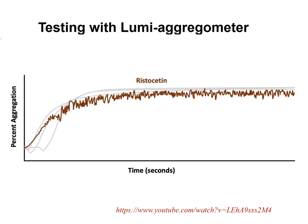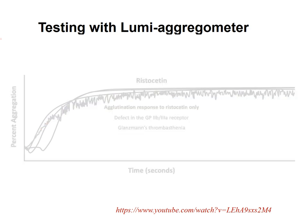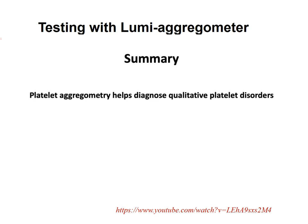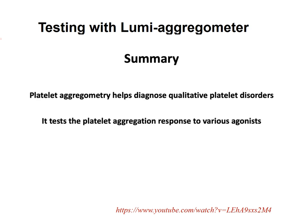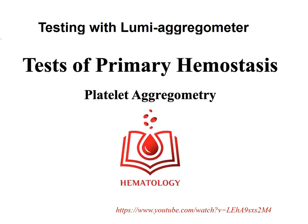Ristocetin is used as a positive control — it is not an agonist promoting aggregation but is necessary for von Willebrand factor-mediated platelet agglutination. No agglutination response implies decreased plasma von Willebrand factor or Bernard-Soulier syndrome (defect in GP1B95). If there is agglutination with ristocetin only but no aggregation with other agonists, it indicates a defect in the GP2B3A platelet receptor, as in Glanzmann's thrombasthenia. In summary: platelet aggregometry diagnoses qualitative platelet disorders using common agonists including ADP, arachidonic acid, and collagen.